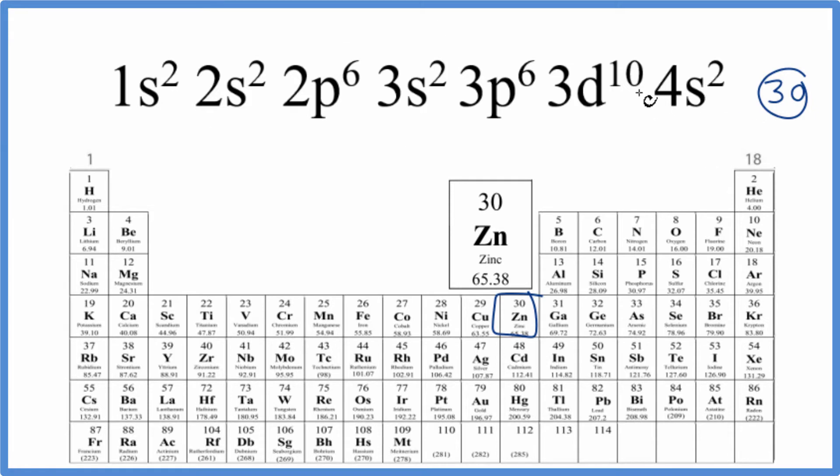We could also write this in abbreviated form. We could find the element, the noble gas, before zinc. So zinc is 30, argon right here. And all 18 of these, we'll put brackets around those 18, this would be argon. So we could just write Ar in brackets for all of this, and that would give us our condensed notation here.